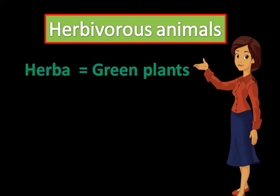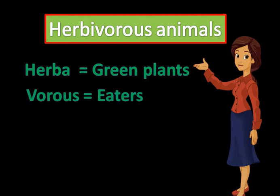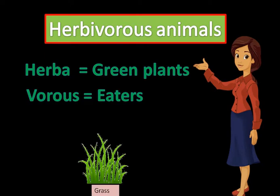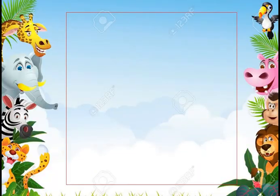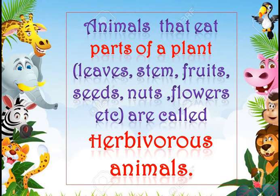Herbivorous animals. Herba means green plants and vorous means eaters. So the animals which eat grass or leaves or parts of the plant are called as herbivorous animals. The animals that eat parts of the plant — which can be leaves, stem, fruit, seeds, nuts, flowers etc. — are called as the herbivorous animals.